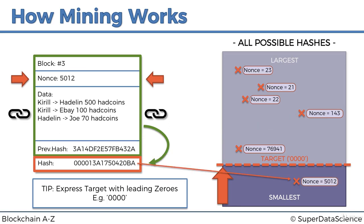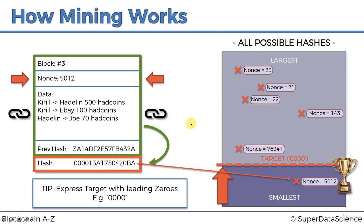Miners change the nonce to try to guess a value that will generate a hash below the target. Once they do find such a value - for instance, nonce 5012 that generates a hash below target - they win. This nonce is commonly called among miners the 'golden nonce,' because it generated a hash below the target with those four leading zeros. Once that's done, they're allowed to add the block to the blockchain and receive the reward. Whoever guesses the right nonce first adds the block, and then the whole process starts again for the next block.